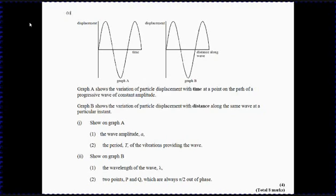Okay, this question is actually quite kind to you because it's done the tricky bit. It's actually shown you graph A and graph B. These are two graphs which look identical but remember, they're showing you very different things. So graph A is showing you what happens to one particle as the wave goes past, whereas graph B is showing you what happens to all the particles in a section of the wave at one instant in time.